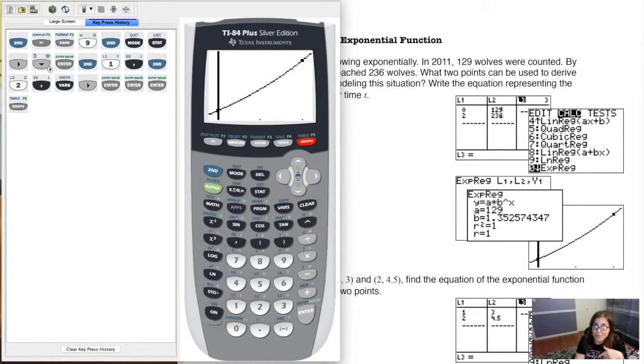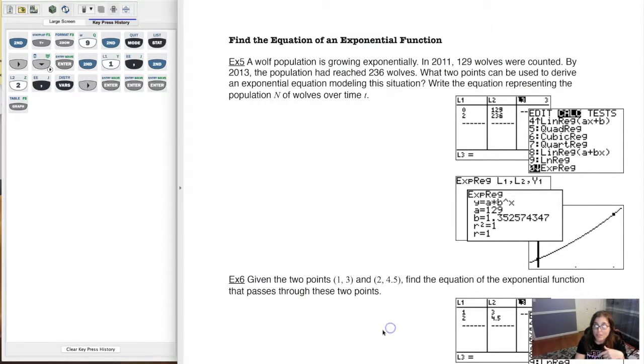Alright, so we're going to move on to example six where instead of giving you an initial value like I did here with the y-intercept, I'm just going to give you two ordered pairs. I'll see you in a bit. Bye.